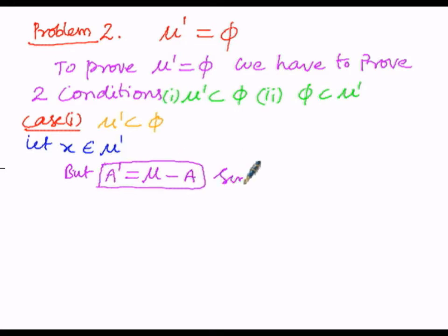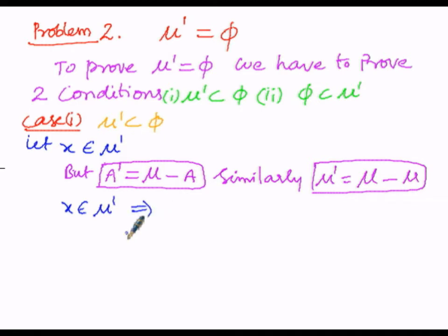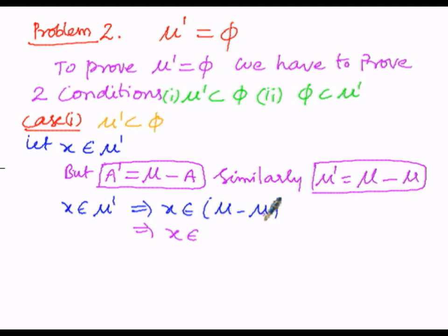Similarly, μ complement will be given by subtracting μ from the universal set μ. Since we are finding the complement of μ, this particular μ must be subtracted from the universal set μ. So x belongs to μ complement implies x belongs to μ dash, which we can replace by μ minus μ. The next logical step is: x belongs to μ, and since μ is subtracted, x does not belong to this second μ, that is the universal set.